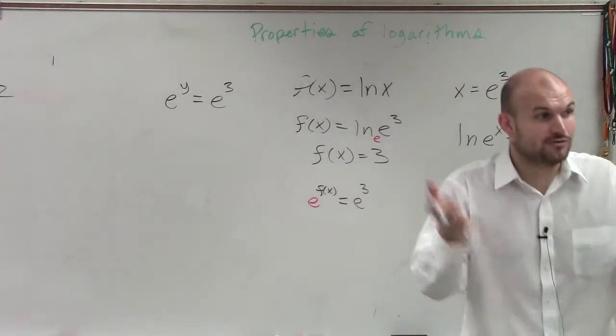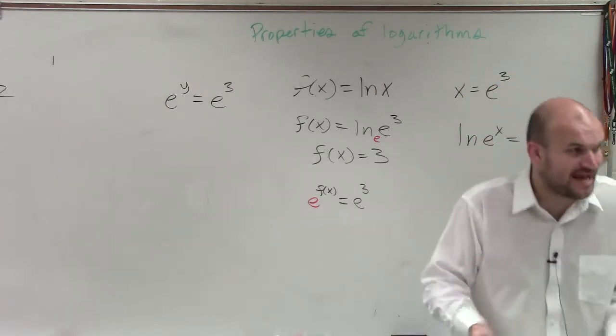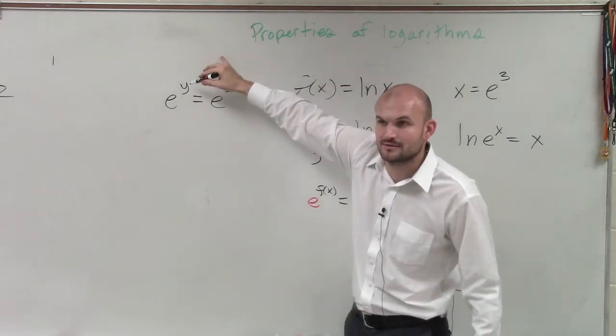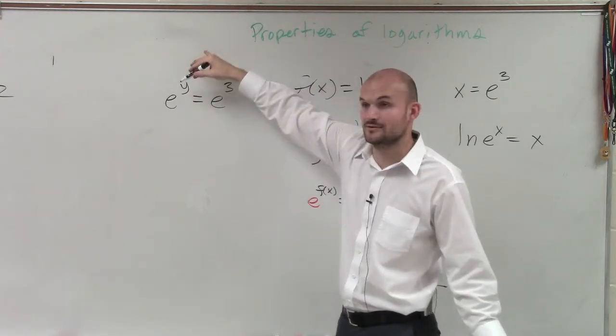If you have a number raised to a power and another number with the same base raised to a power, what does this power have to be? It has to be the same, which is 3.